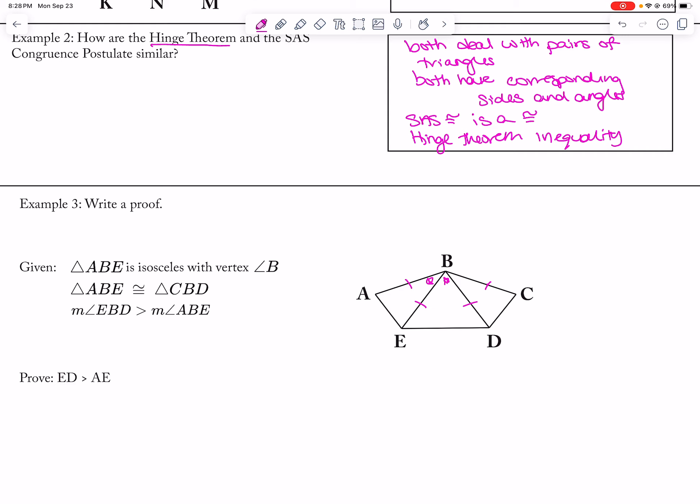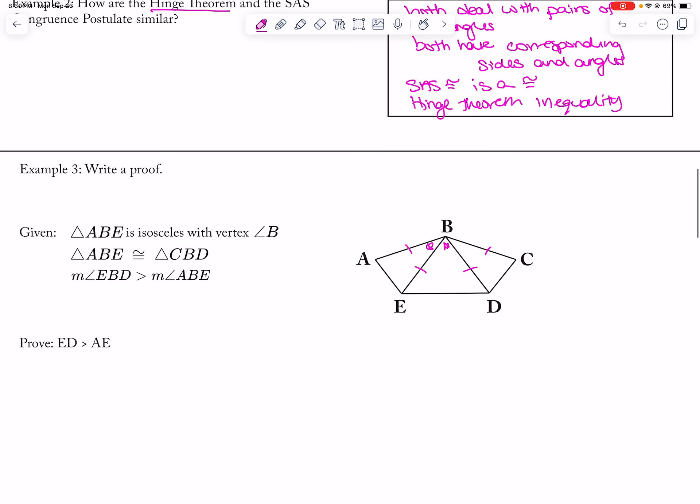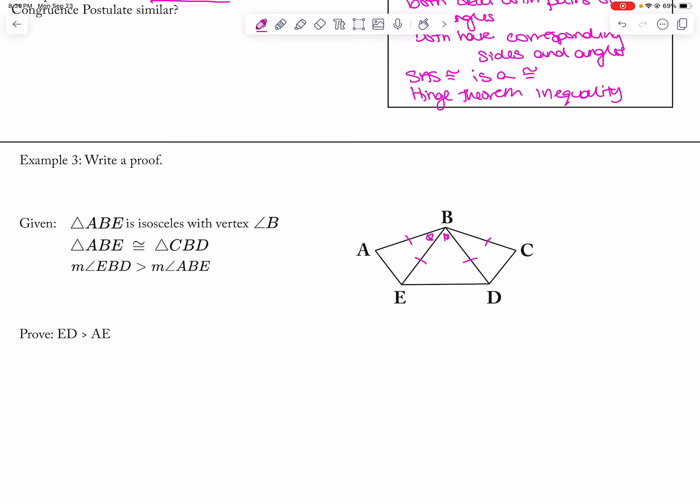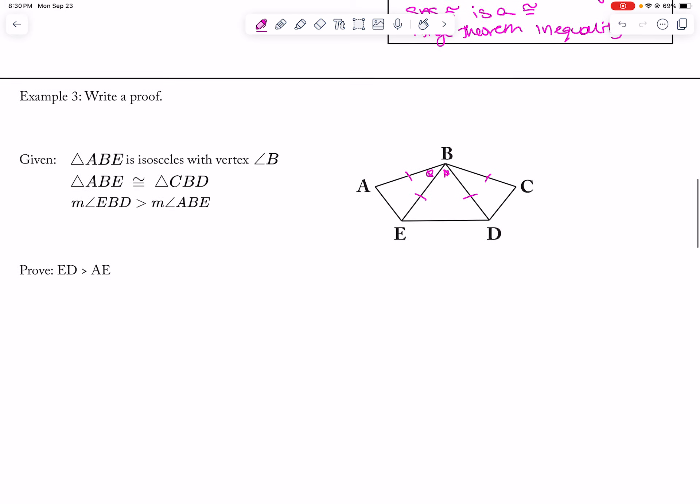So now what I need to do is prove that ED is bigger than AE. Obviously it's like you could tell by the picture, but you can't go based upon the picture. So let's look at statements and reasons. Okay, so the first thing is triangle ABE is congruent to triangle CBD, and that is given. And then we're also going to say that triangle ABE is isosceles, and that's also given with vertex B.